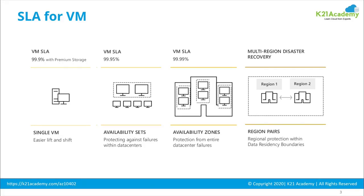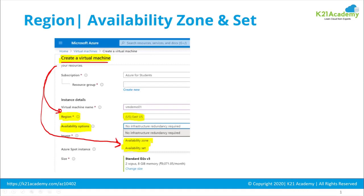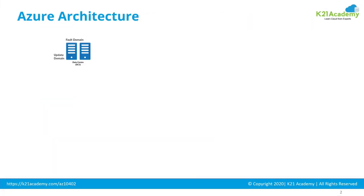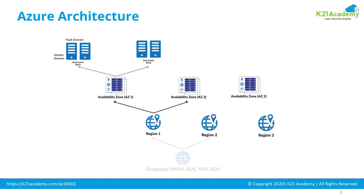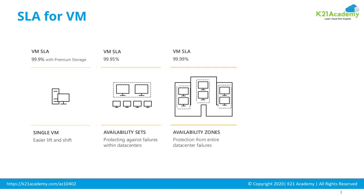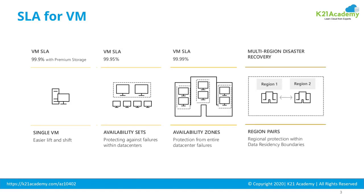Just to recap: when you create virtual machines, you can create them with no redundancy, or in an availability zone or availability set. When you place them in an availability set, you're placing them in two different fault domains within a data center. Multiple data centers make an availability zone, multiple availability zones make a region, and multiple regions make a geography. These are the service level agreements you get depending on how many machines you create and how you place them.